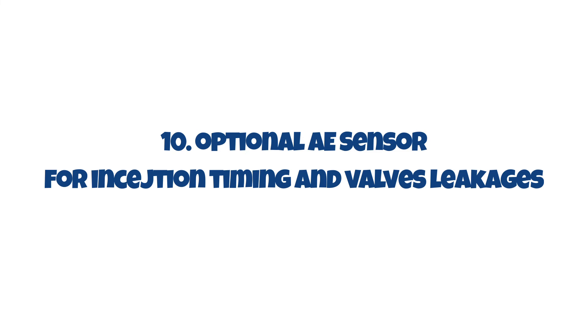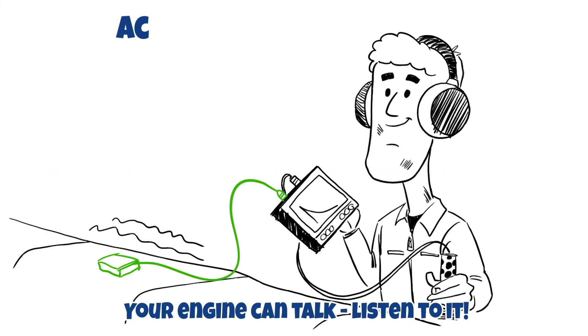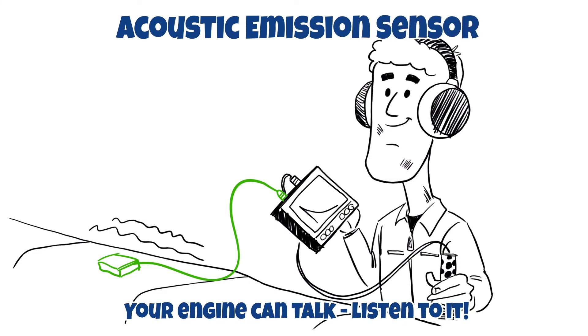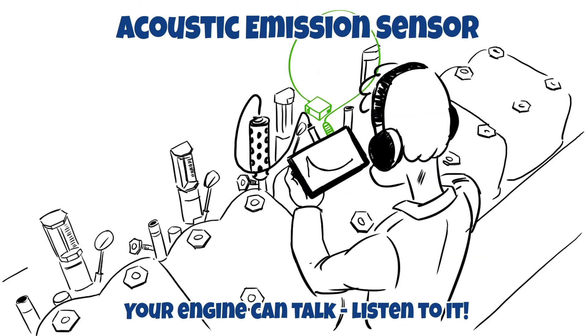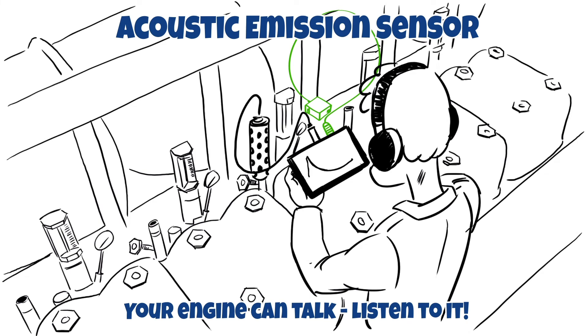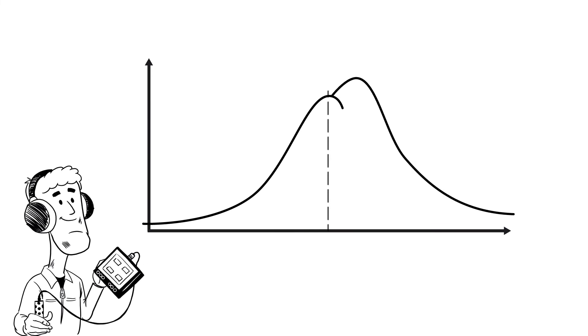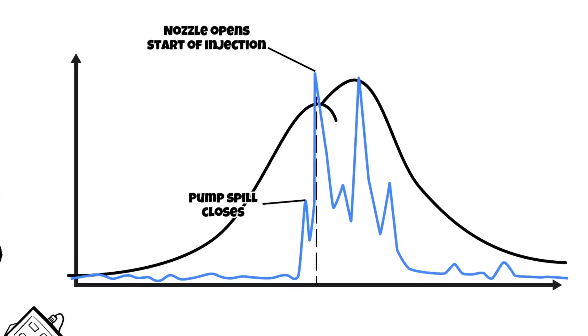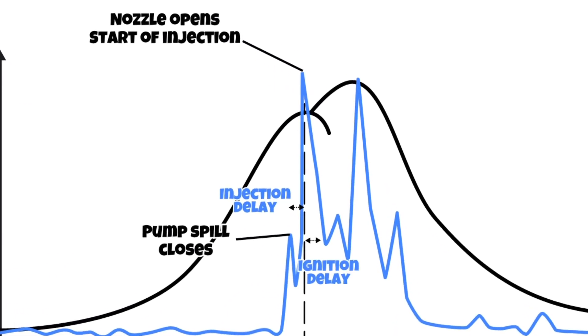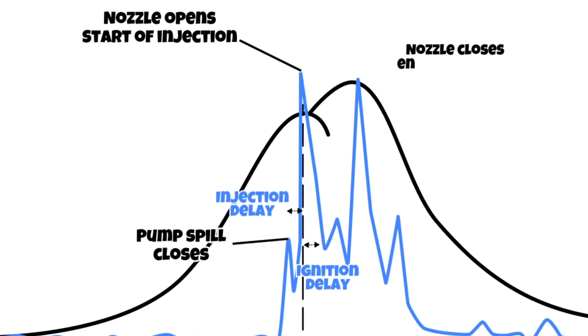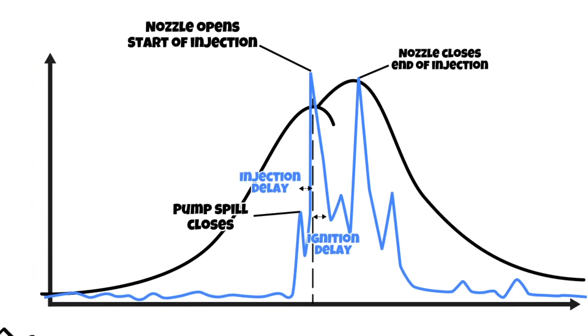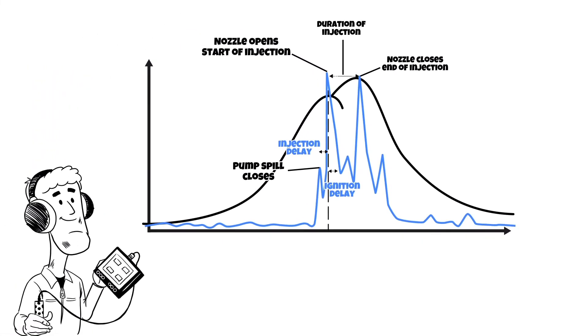Optional acoustic emission sensor. Listen to your engine, it can talk. Only the Primit X can use an acoustic emission sensor to measure additional parameters for the fuel injection, valve activity as well as detecting possible valve leakages. It can show you among other additional parameters the angle at which the pump spill closes and when the injection starts and ends. This allows the calculation of injection and ignition delay as well as other important parameters.